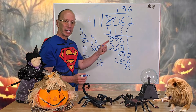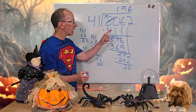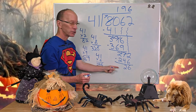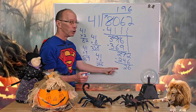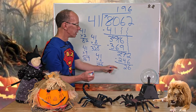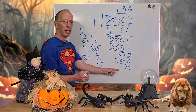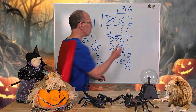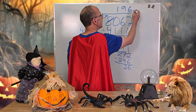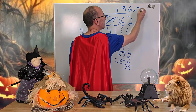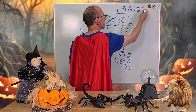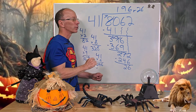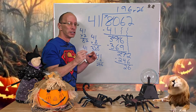Do I have any numbers to drop down? No. Can 41 go into 26? No. That is our remainder. Our remainder is 26, and that is our answer: 196 with a remainder of 26.